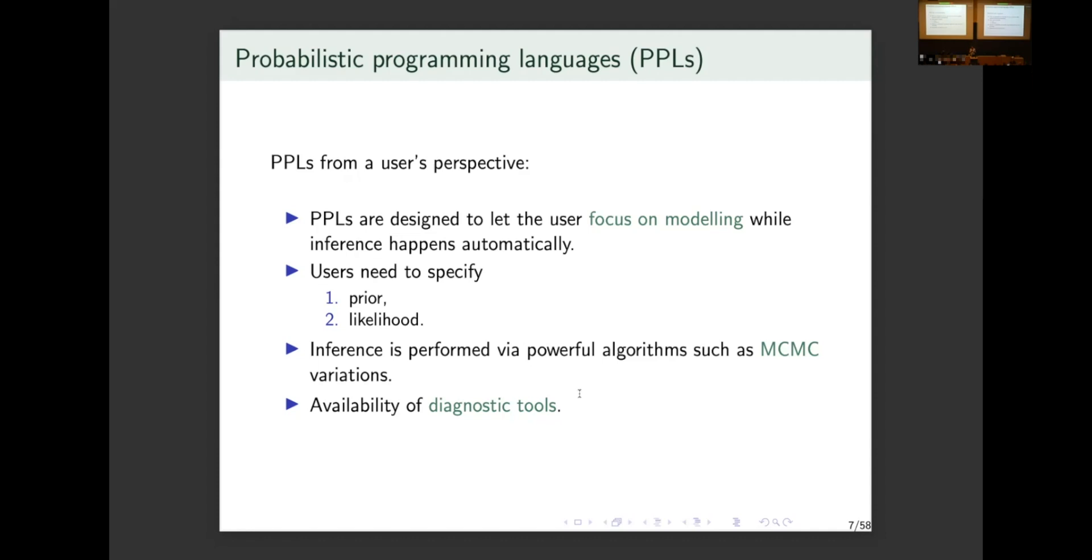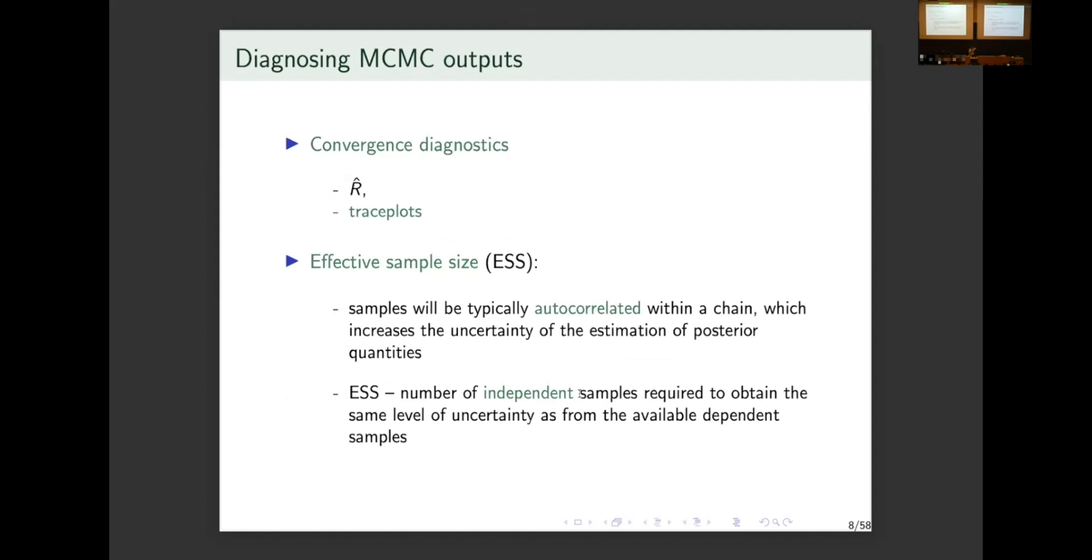So, and the last point, why do we want to use PPLs is because they already have, as a part of the software, various diagnostic tools which can help us assess whether inference went well or something went wrong. So, what are those diagnostic tools? For example, after we have performed MCMC inference, we need to compare where each of the chain has converged and how do various chains compare to each other. And to help us do that numerically, such statistics as R-hat exists, I think it's also called Gelman-Rubin, roughly what it estimates is variance within chain to variance between chain.